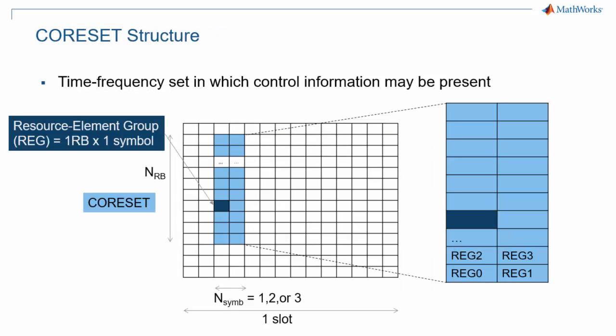The basic unit for a core set is resource element groups. Resource element groups consist of 12 resource elements by one OFDM symbol, and they were introduced in another episode of this 5G Explained series about downlink control information. A core set spans a multiple of possibly non-contiguous groups of six resource blocks in frequency, and between one and three contiguous OFDM symbols in time.